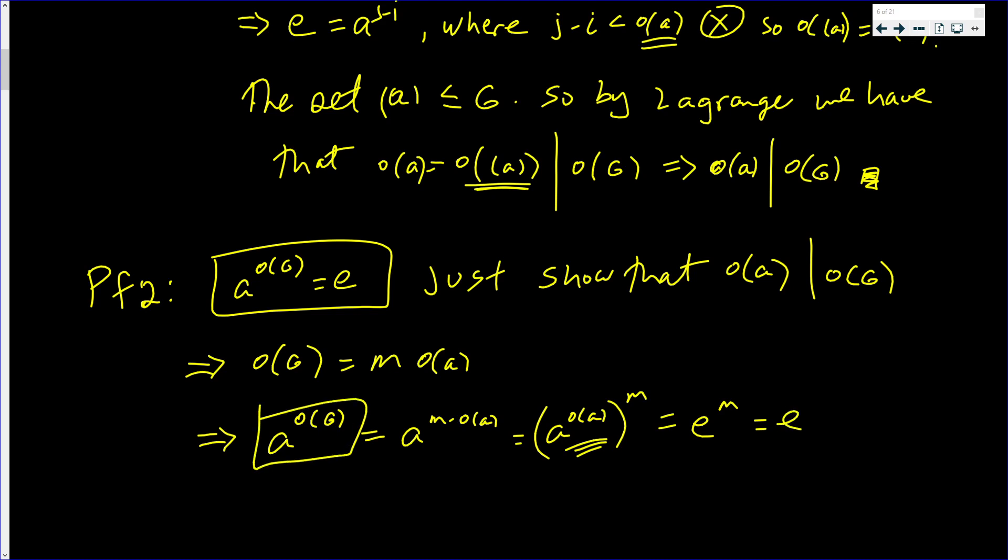So A raised to the order of the group will always give you E. Of course, the group has to be finite. And that completes the proof of the second corollary.